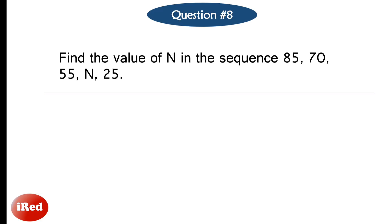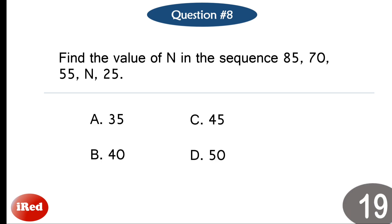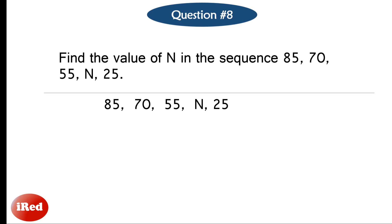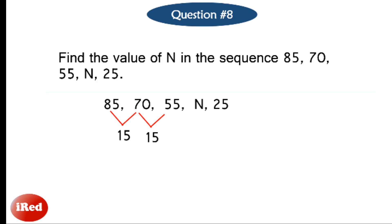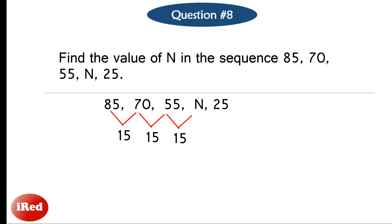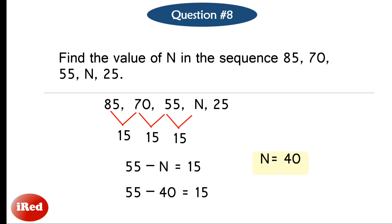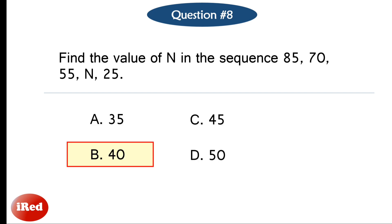Question 8: Find the value of n in the sequence. We can see that the difference between two consecutive terms is equal to 15: 85 minus 70 is 15, and 70 minus 55 is also 15. So what is the value of n such that 55 minus n equals 15? The answer is 40, since 55 minus 40 equals 15. The correct answer for number 8 is letter B, 40.